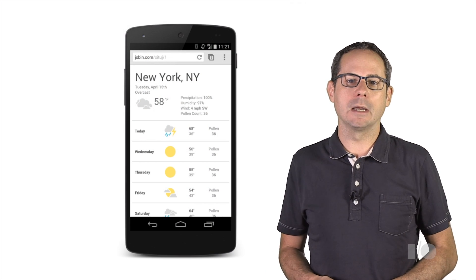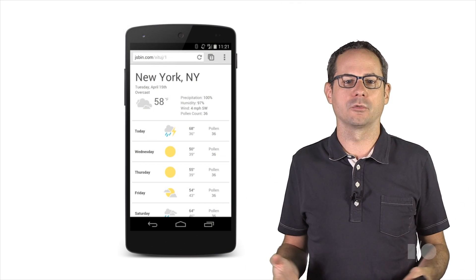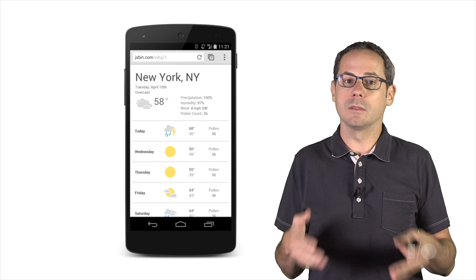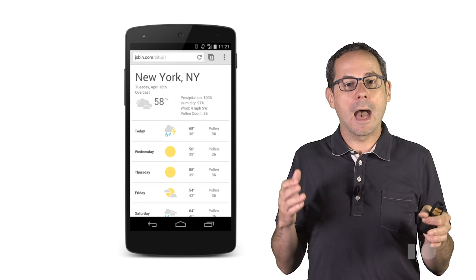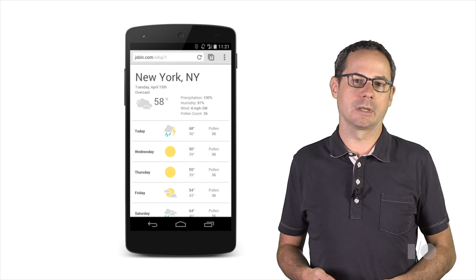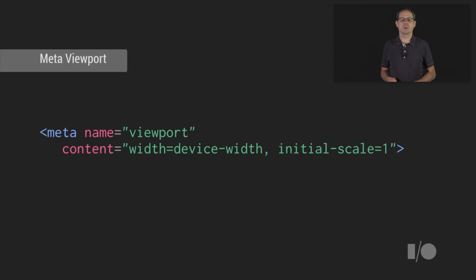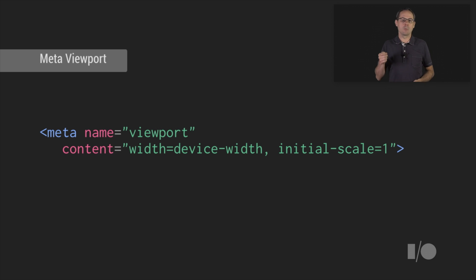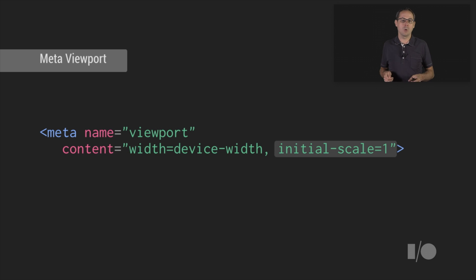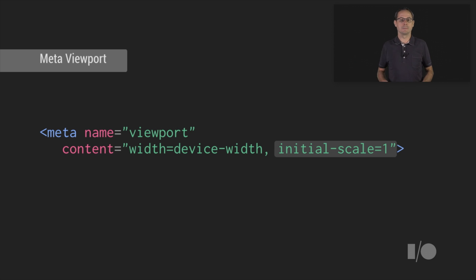I've already created a page that looks great on a small screen. It has all my content, the styles for the small screen, and it includes the meta viewport tag. The meta viewport tag is important because it tells the browser to adapt the content to the size of the device. It's important to set width equals device-width and initial-scale equals 1 to establish a one-to-one relationship between CSS pixels and device-independent pixels.